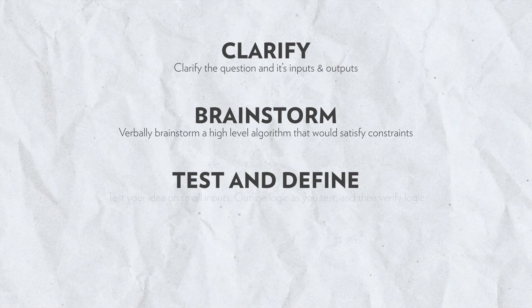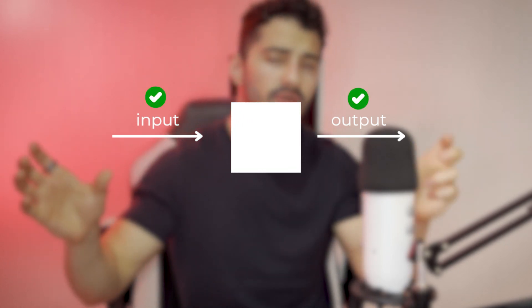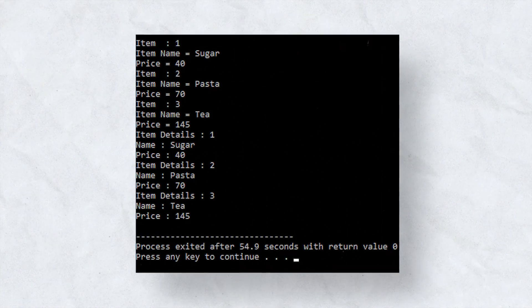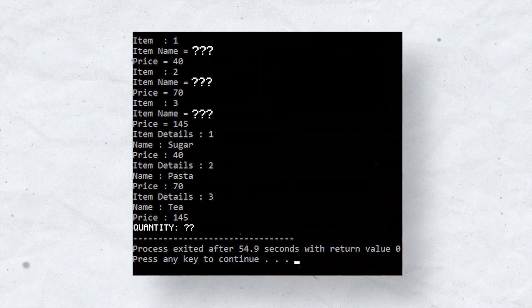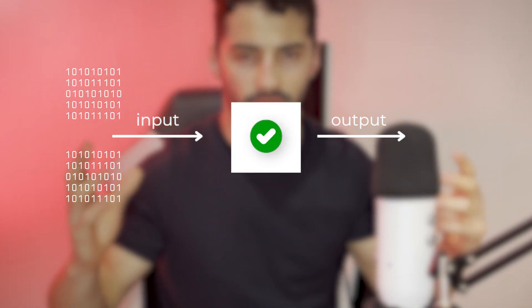The four-step framework works like this: first clarify, second brainstorm, third test and define, fourth code it. The first step is to clarify the question with the interviewer. They'll ask you to code an algorithm that takes a specific input and transforms it into a specified output. Make sure you understand the data types of the inputs and outputs, the scope of the input, and edge cases — for example, whether an array could be empty — and confirm what the output should be in each scenario.